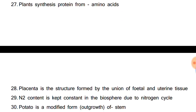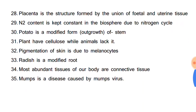Plants synthesize protein from amino acids. Placenta is the structure formed by the union of fetal and uterine tissues. Nitrogen is kept constant in the biosphere due to the nitrogen cycle, and nitrogen is the most abundant gas present in the atmosphere at about 78%. Potato is a modified form of stem. Plants have cellulose while animals lack it. Pigmentation of skin is due to melanocytes, and melanocytes produce melanin. Radish is a modified root.